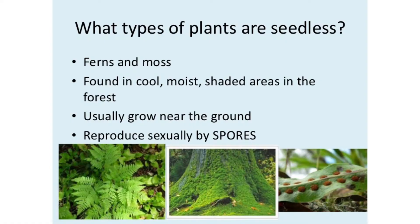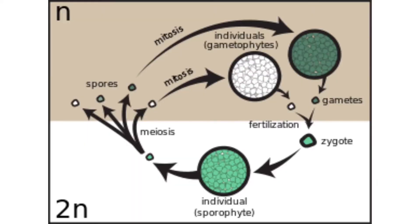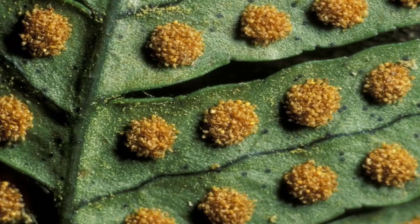Seedless plants, such as mosses and ferns, are non-flowering plants that reproduce by forming spores. A spore is a reproductive cell that can form a new organism. The life cycle of the seedless plant has two stages.